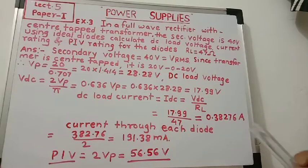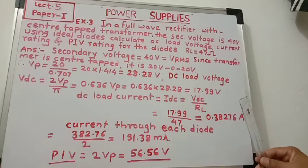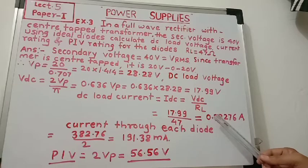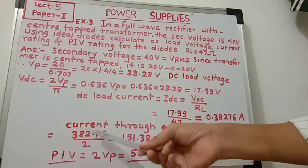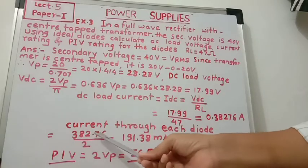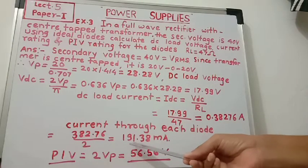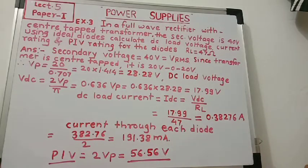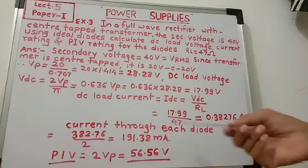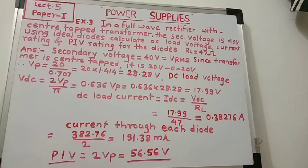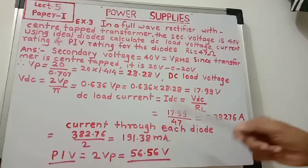Now we have to calculate current through each diode. We know that current through each diode is half that of the load current — half that of the current flowing through the load resistance. Therefore, current through each diode is equal to 382.76 milliampere divided by 2, and it equals 191.38 milliampere. This is the current flowing through each diode — the diode current rating. The current rating of each diode must be greater than this value for this power supply.